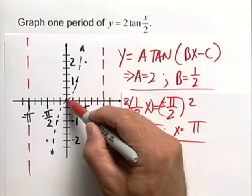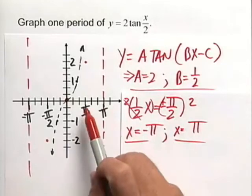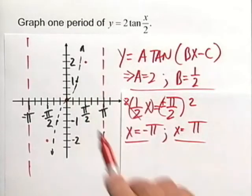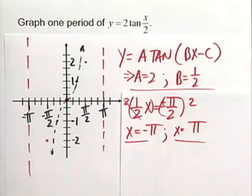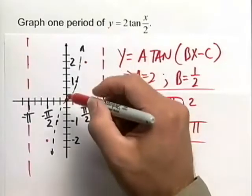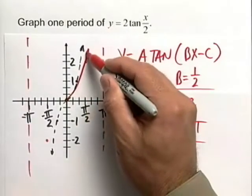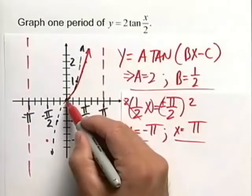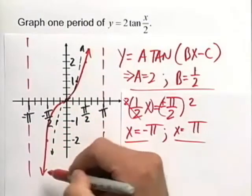So just like before, we have our origin. We're going to have the point pi halves comma 2 and negative pi halves comma negative 2. And then we know how our tangent graph reacts around our vertical asymptotes. So let me draw this in for you here. There's the right-hand side of our graph. And here is the left-hand side.